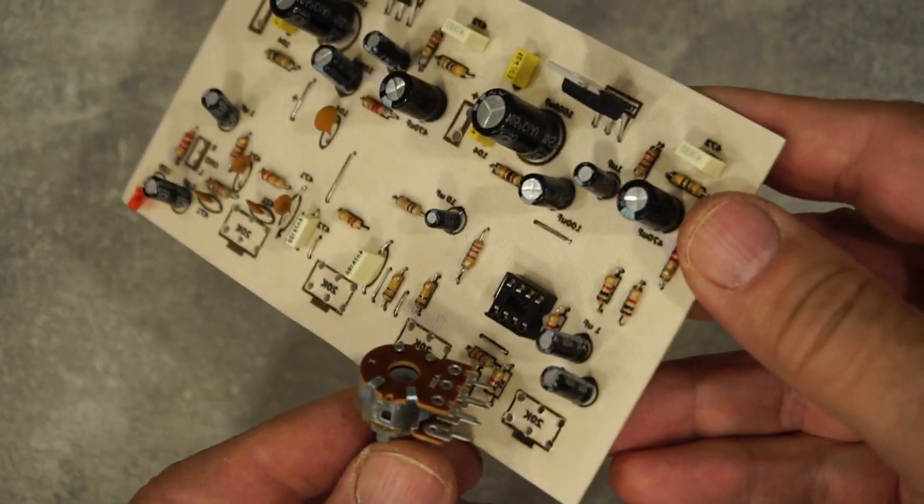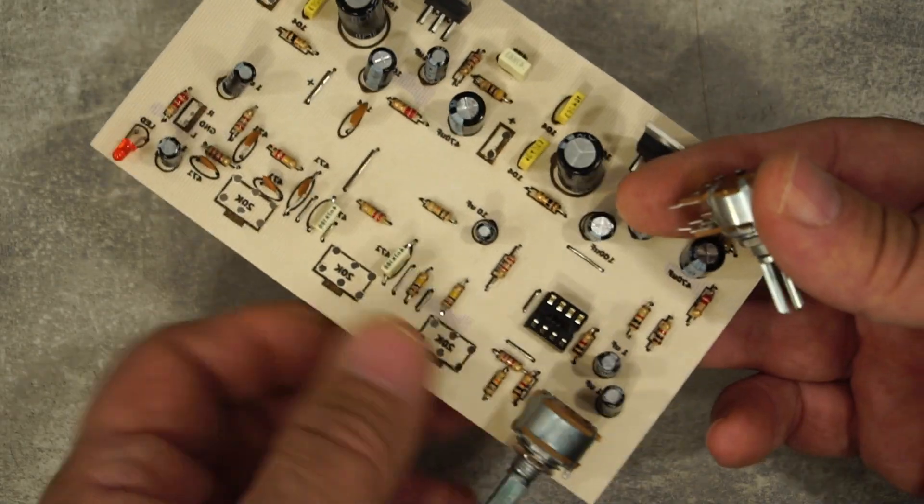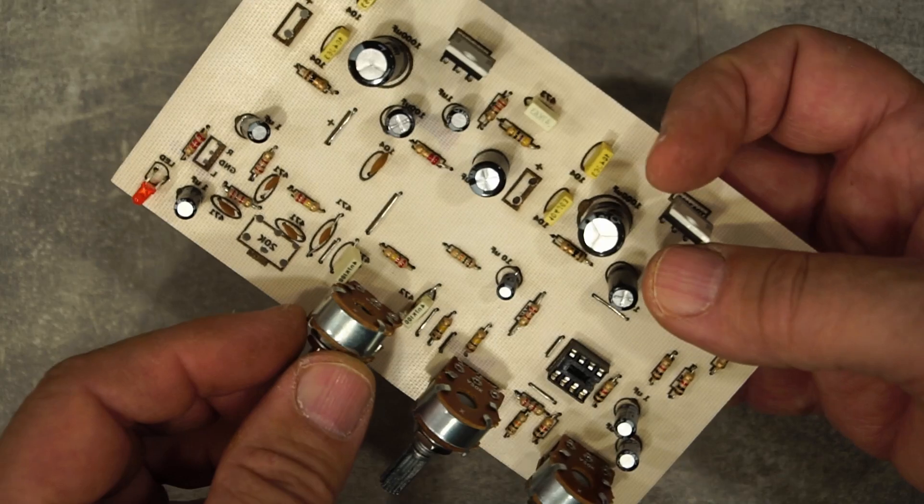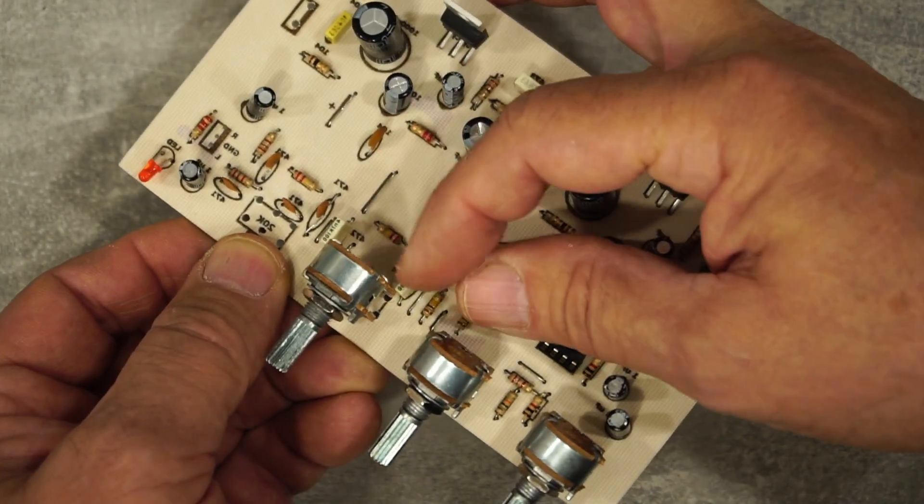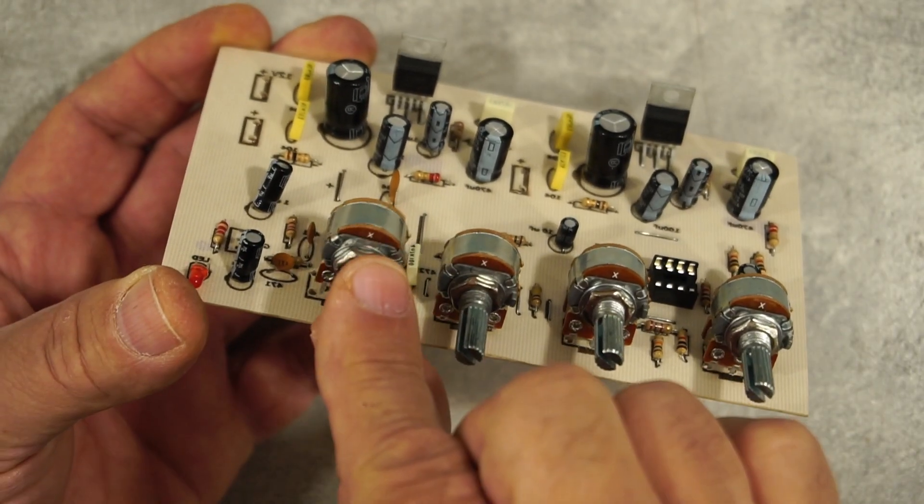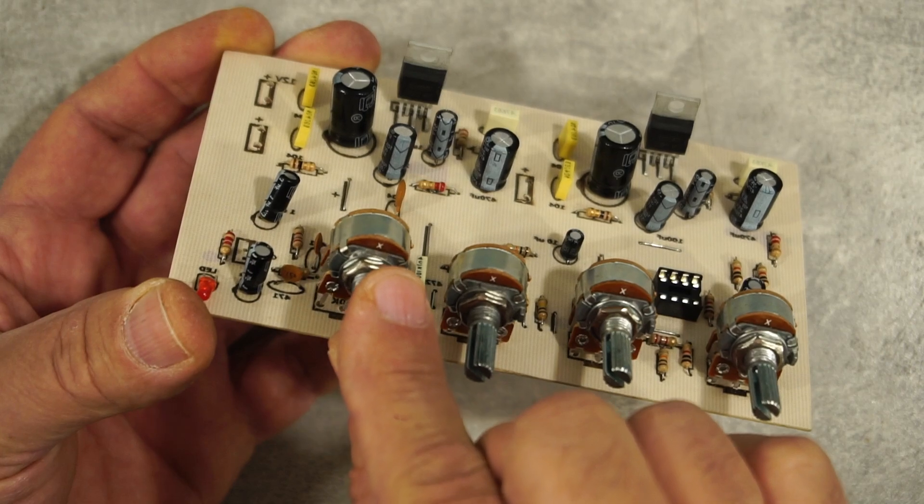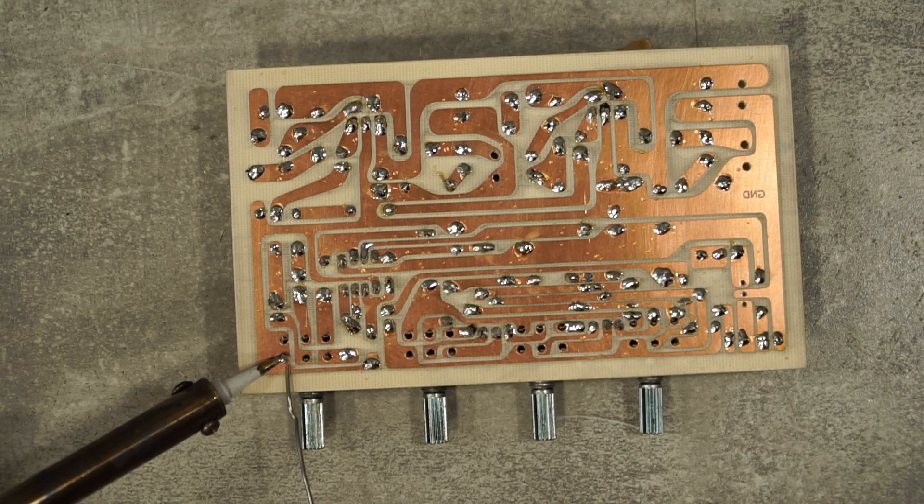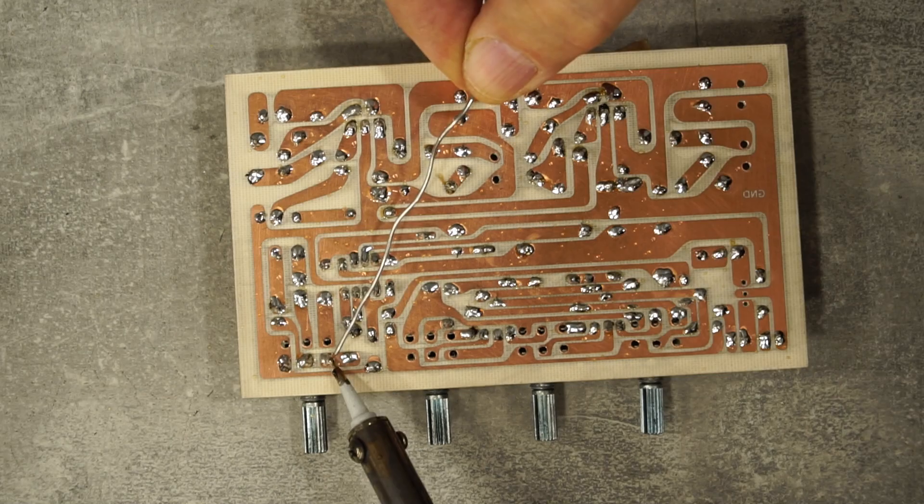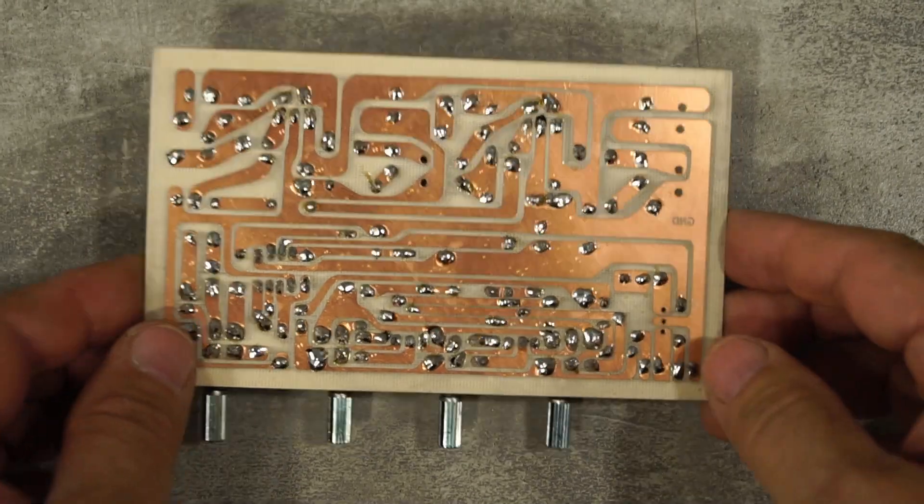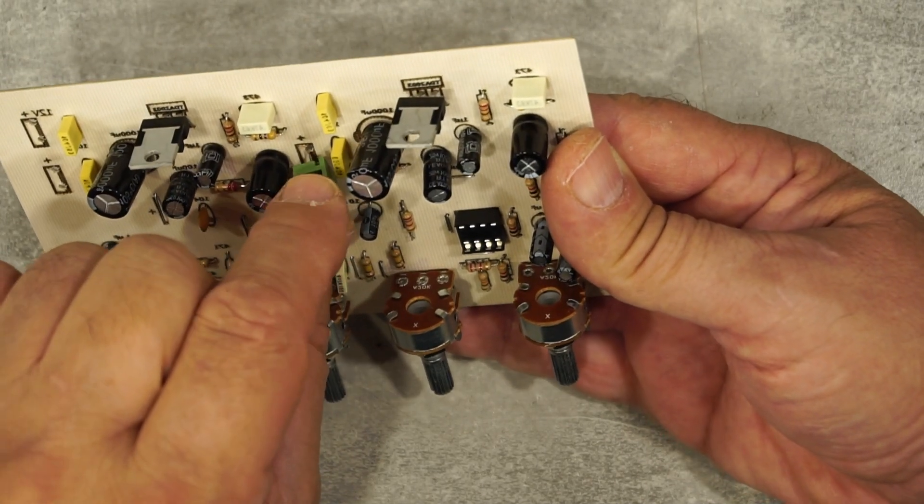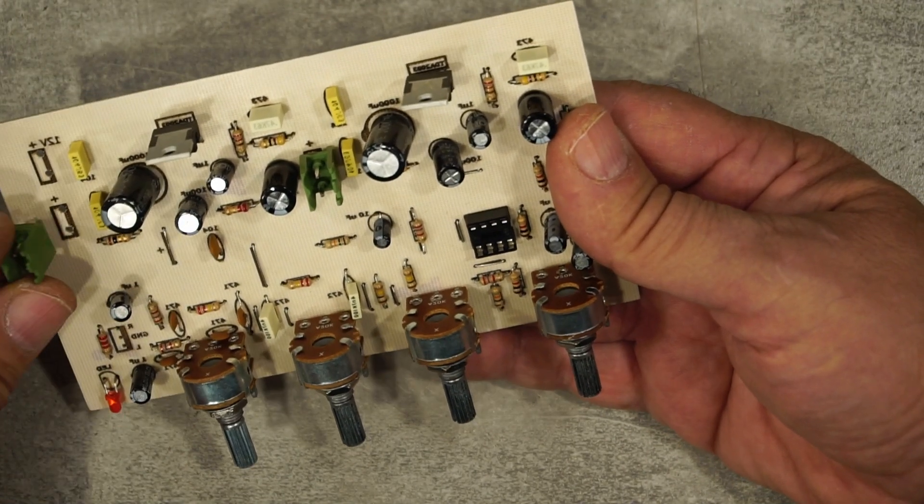And finally, I place the 20k ohm potentiometers to complete the amplifier. I solder them. I also place the connectors for the left and right channel, power supply, and input signal.